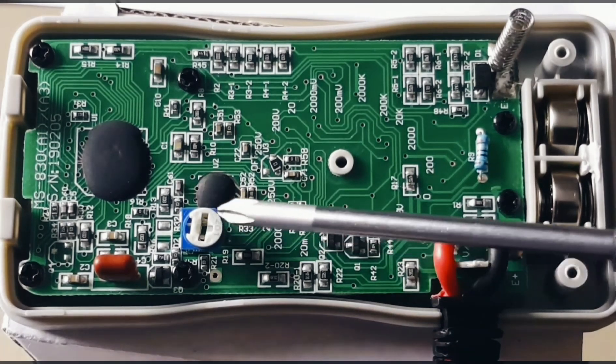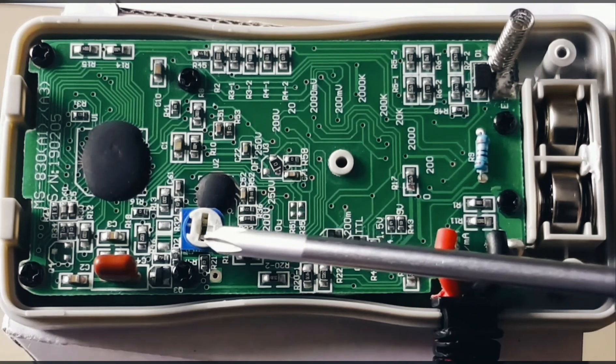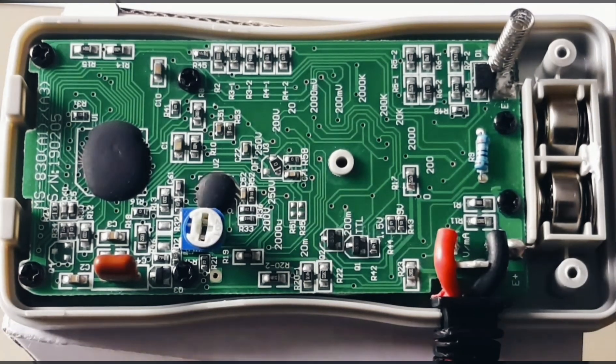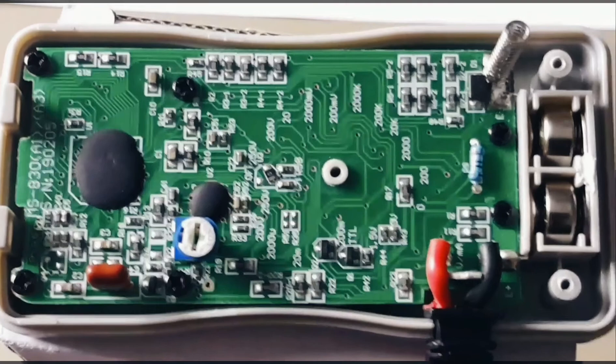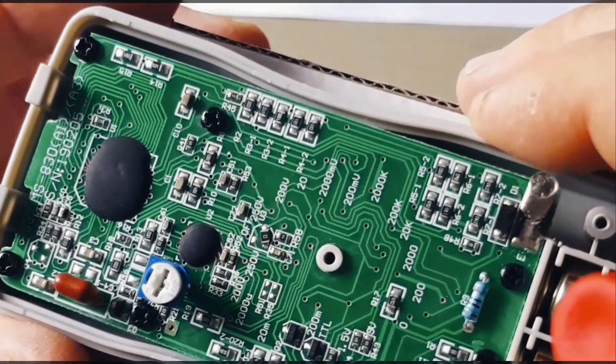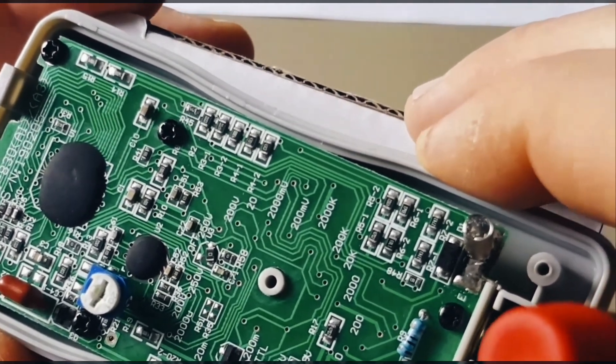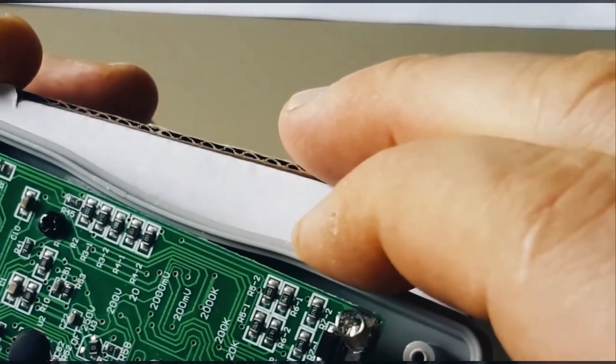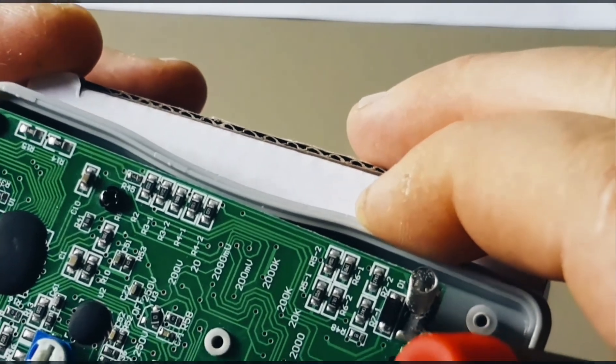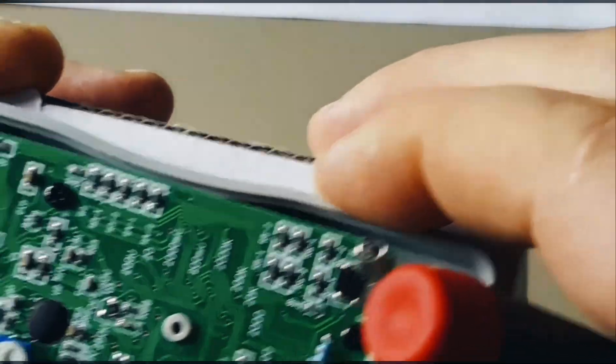Here we see a trim pot. You can actually calibrate this meter if you choose to do so, at least in terms of the actual voltage. The manufacturing date on here, trying to see if it was there. It's just a serial number, MS830 A1. I assume that's the revision. 190205, it's just the serial number.